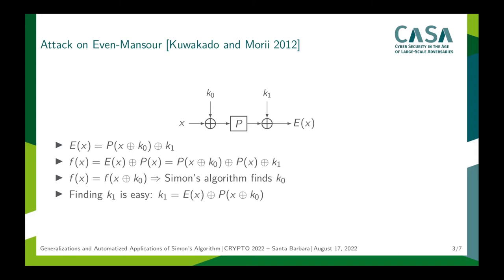Hence, we can use Simon's Algorithm to find k0. And once we know k0, finding k1 is easy. And therefore, O(n) quantum queries to the encryption e are enough to completely break the Even-Mansur construction.